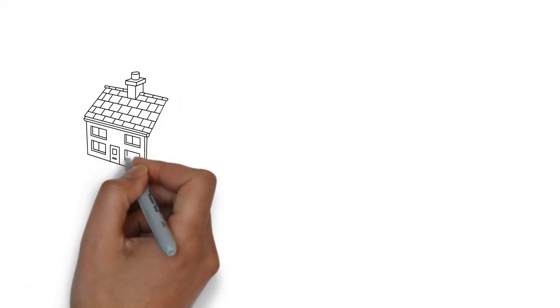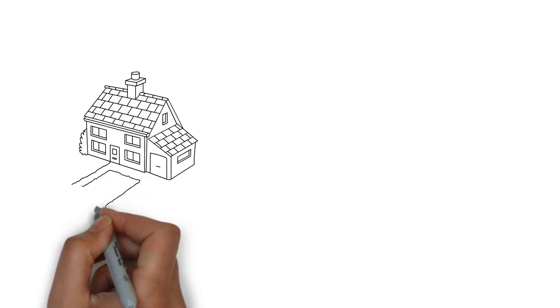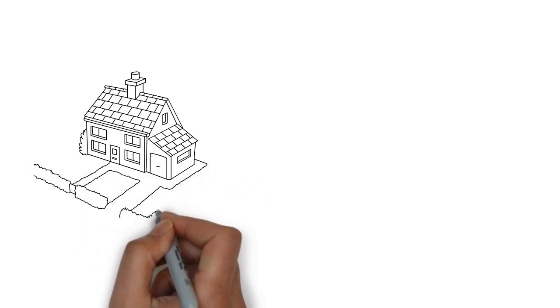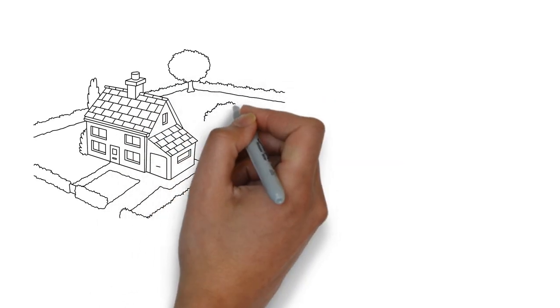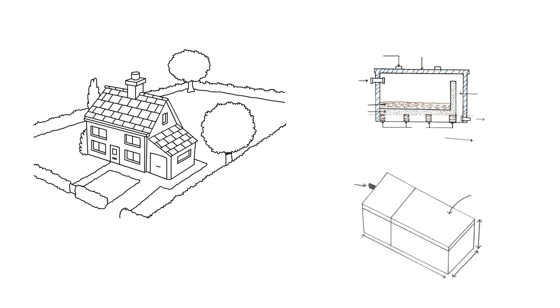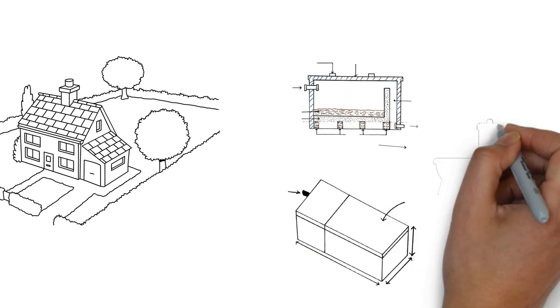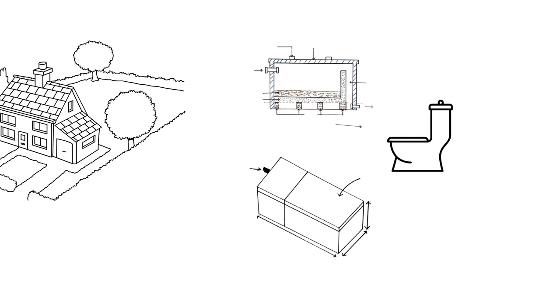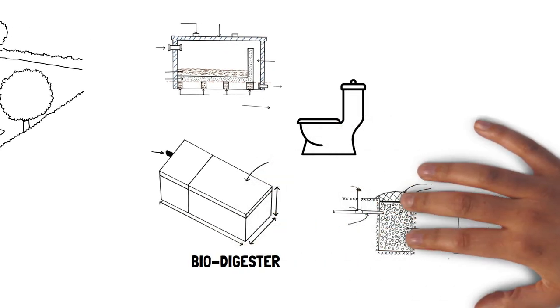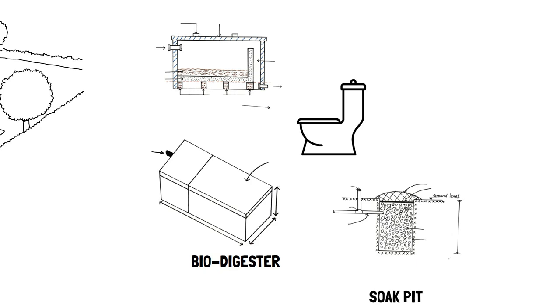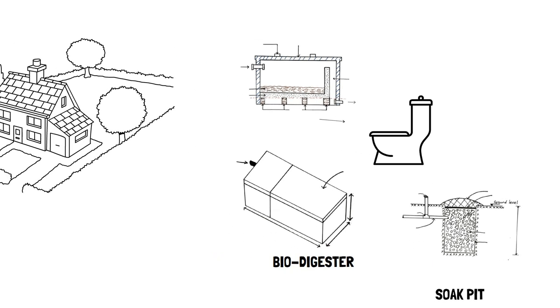In conclusion, as an upcoming homeowner, there are so many things to consider. From the materials you'll use to build your house, to how you'll handle your sewage at home. I would recommend installing a biodigester at your home if you have flush toilets present. I hope this video has shed some light on the workings of a biodigester and a soak pit. They work together to ensure a sufficient sanitation system for your home.